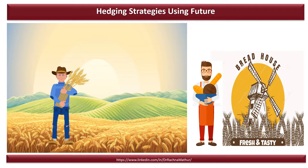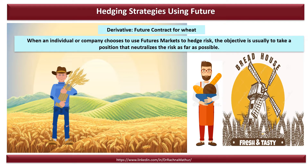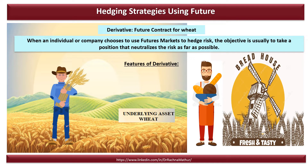They both decide to move into a derivative market — that is, a future contract for wheat. The objective of moving into a derivative market is to hedge the risk associated with the price uncertainty of the market. When an individual or a company chooses to use the futures market to hedge a risk, the objective is usually to take a position that neutralizes the risk as far as possible. The most common derivative markets are forwards, futures, and options.